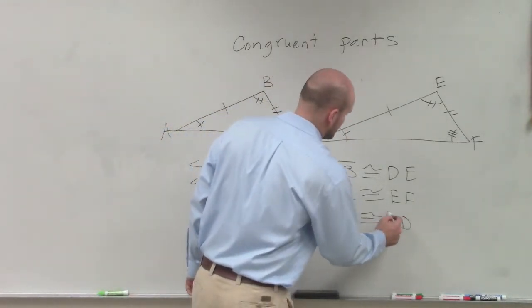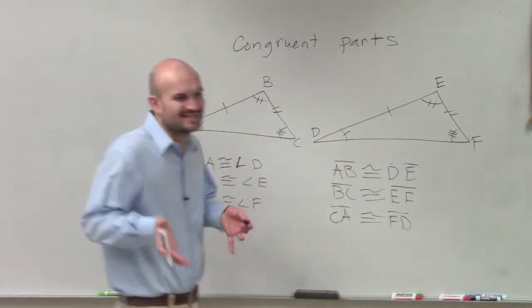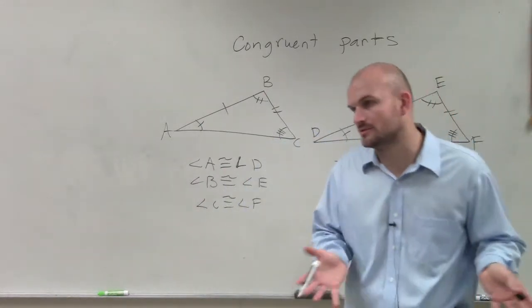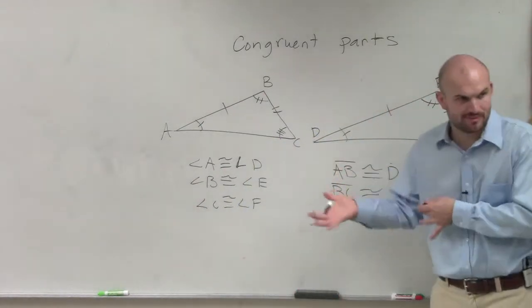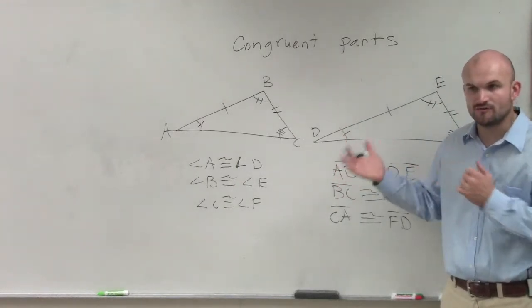So when we're talking about congruent parts, we're talking about what parts are in the exact same location of each triangle, all right? Now, we already know that they're going to be congruent in size and measure, but they're in the exact same location of each and every triangle.